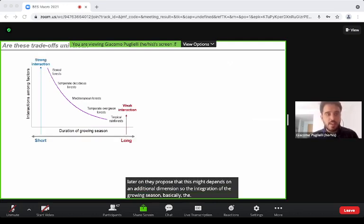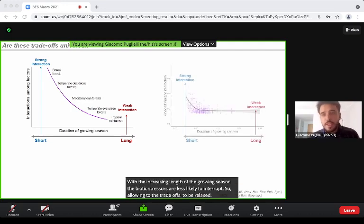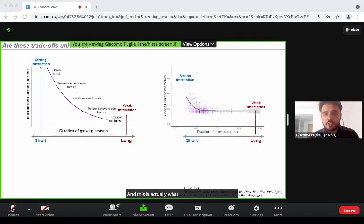The duration of the growing season—basically they hypothesize that with increasing length of the growing season, abiotic stresses are less likely to interact, allowing the trade-offs to be relaxed. This is actually what Lanniste and colleagues found in 2015.